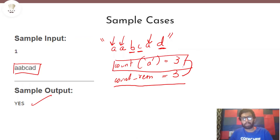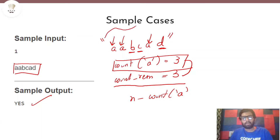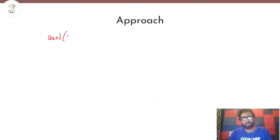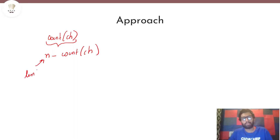Now, once we find out the count of a particular pizza, how do we find the sum of quantities of the remaining pizzas? You can just do n minus the count of the pizza you just found. For example, the count of pizza 'a' is 3, so the sum of quantities of the remaining pizzas is the length of the string minus the count of 'a'. If both of these counts match, it means we've found our criteria for outputting yes.